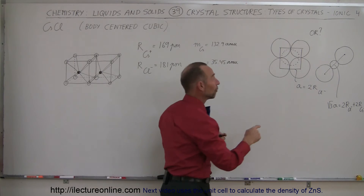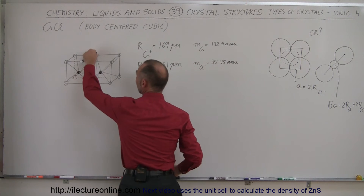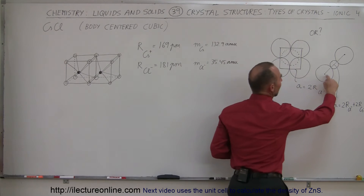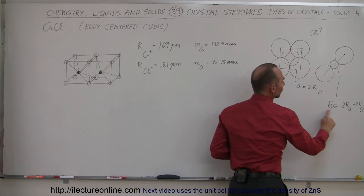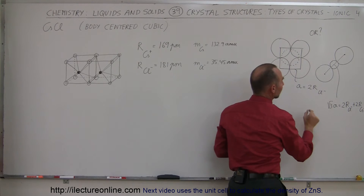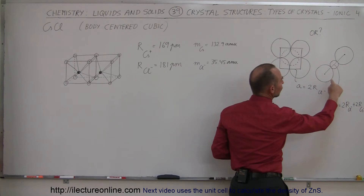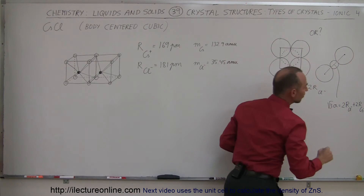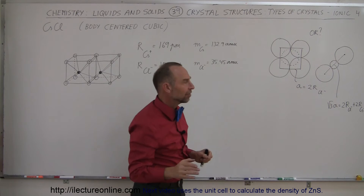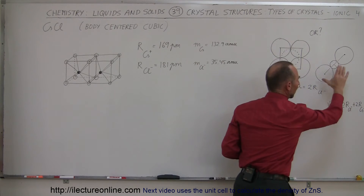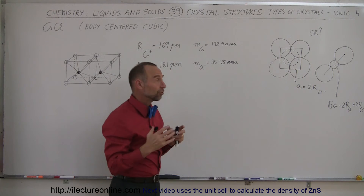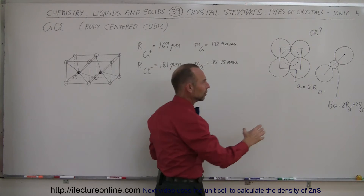Another way is to go diagonally across the cube from the bottom front corner to the rear top corner. We can imagine that the diagonal — which is the square root of three times A, where A is the side of the cube — equals two times the radius of the chlorine ion plus two times the radius of the cesium ion (one full diameter). If we find the density using this relationship, we get something fairly close to the actual measured density. So this is the correct way to do it.